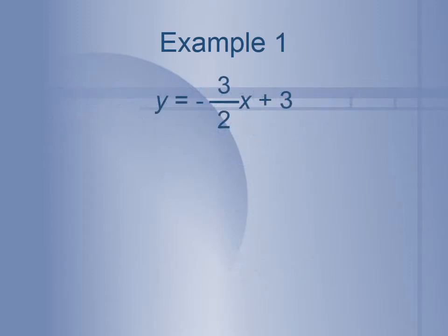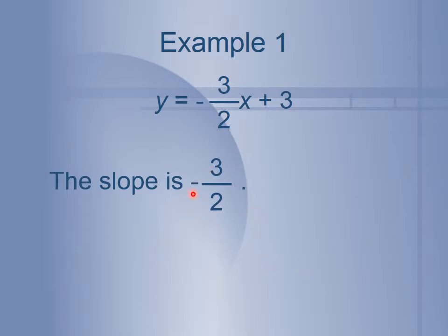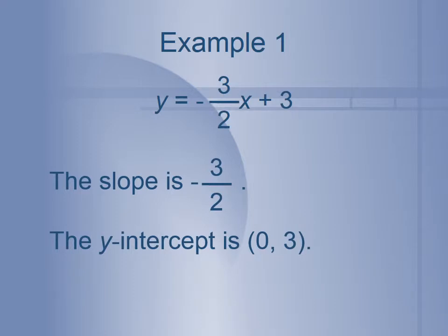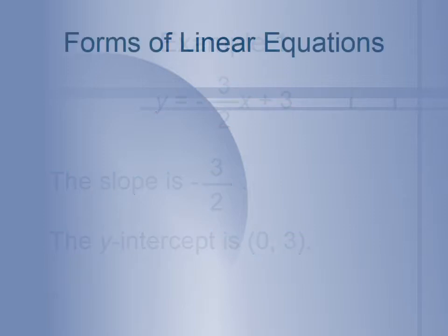So now that we've solved for y, what does this tell us? It tells us that the slope is negative 3 halves. And if a slope is negative, remember that means it's going downhill — also useful information. Then our b value is 3, which means that our y-intercept is the point (0, 3). So we have our slope and our y-intercept.